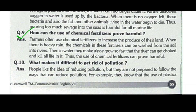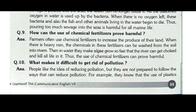How can the use of chemical fertilizers prove harmful? Farmers often use chemical fertilizers to increase the produce of the land. When there is heavy rain, the chemicals in these fertilizers can be washed from the soil into rivers. In water, they make algae grow so fast that the river can get choked and kill all life in it. Thus the use of chemical fertilizers can prove harmful.